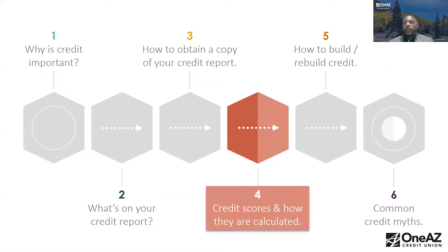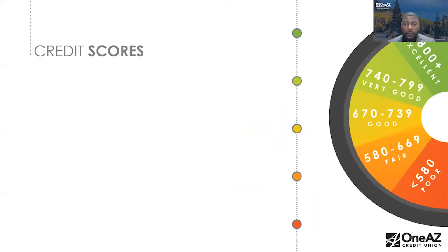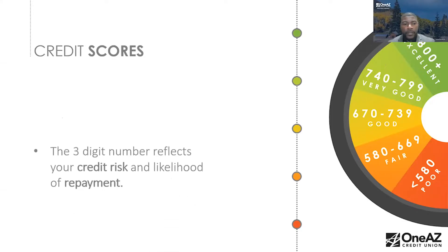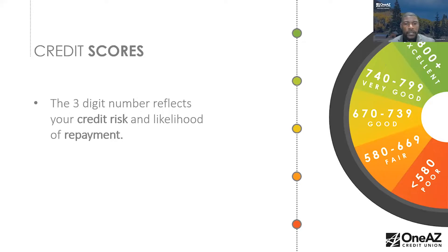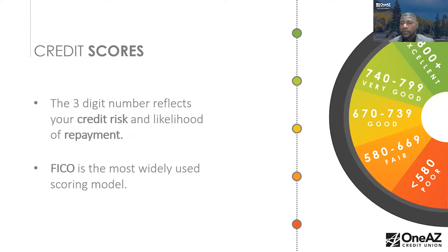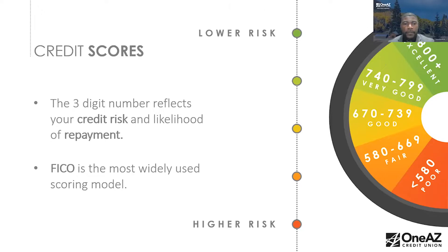This is why monitoring your credit report matters. Credit scores range from 580 or below — considered poor — up to 800 or above, which is excellent. The three-digit number reflects credit risk and likelihood of repayment. The FICO score is the most widely used model, and it determines whether you get favorable terms on loans, car loans, or home loans.